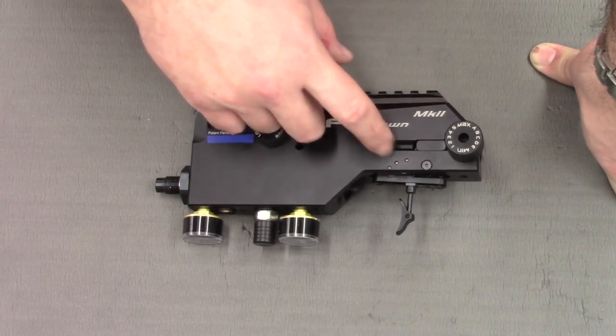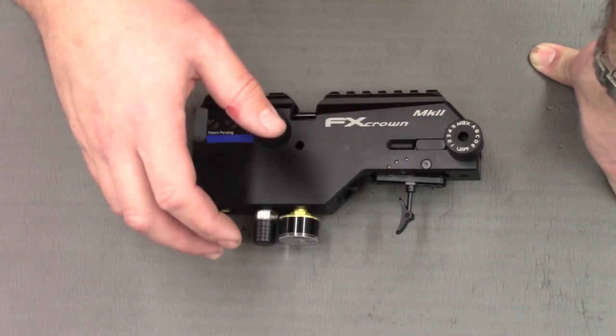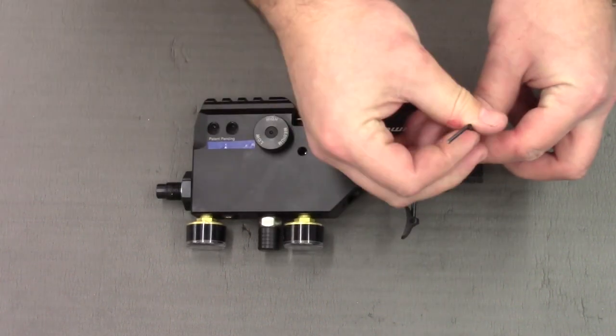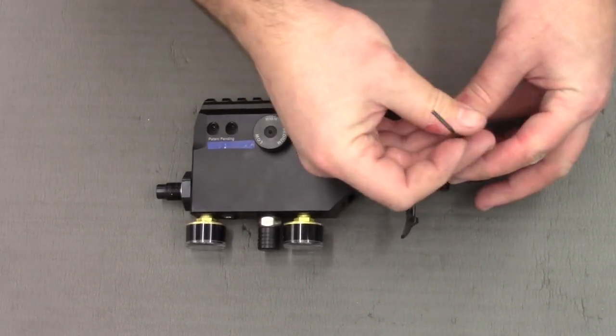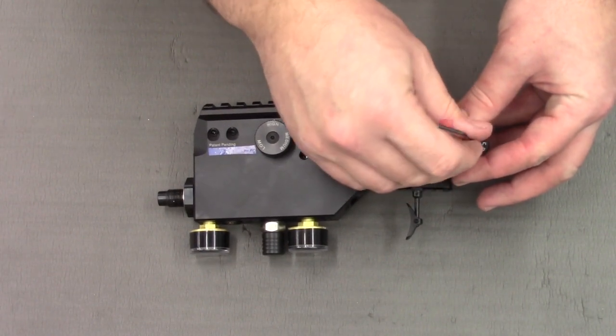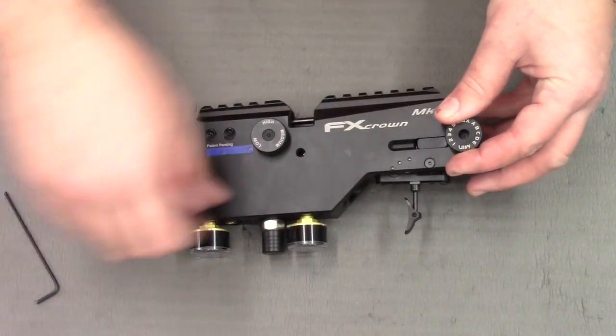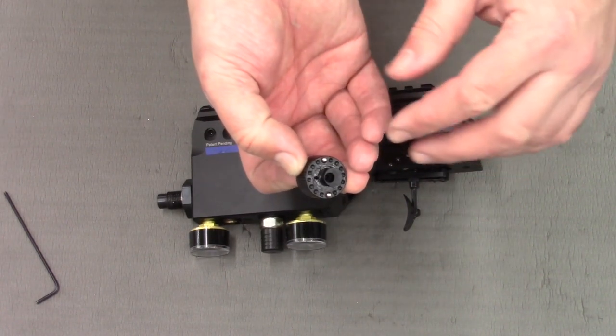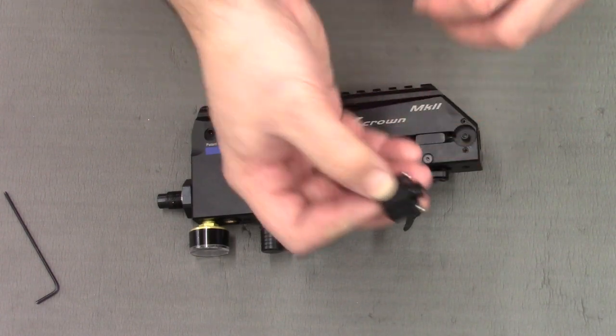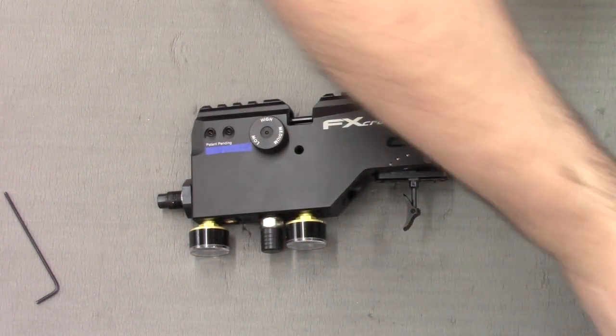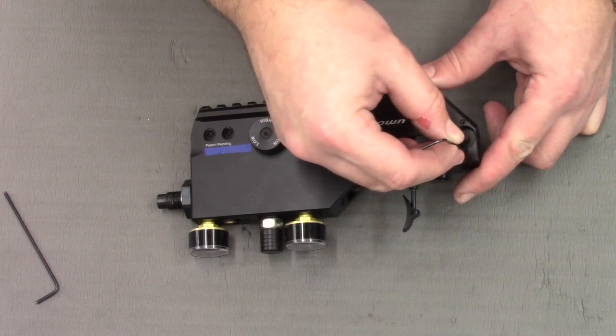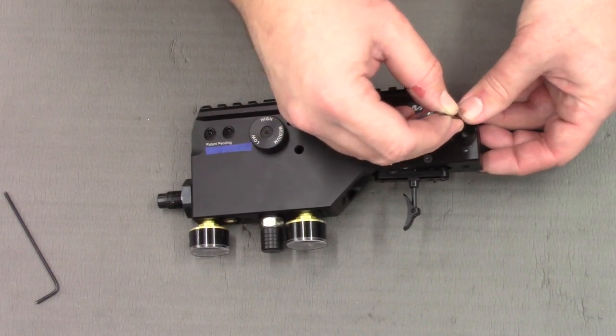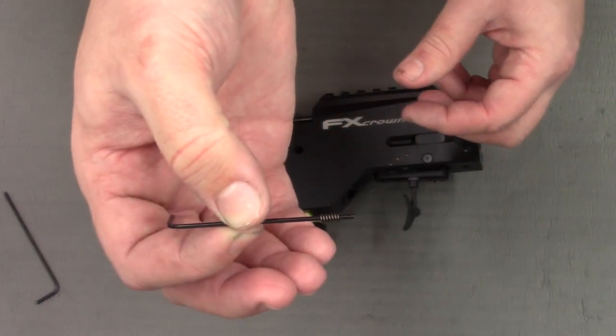First of all I'll show you how to get the trigger sear out. Take your 2mm Allen key and just undo the power wheel here. Be careful, there's two ball bearings and a couple springs underneath this so just be cautious as you take them out. You can leave the springs in the rifle but I find it's just best to take them out and you can do that with the 1mm Allen key.